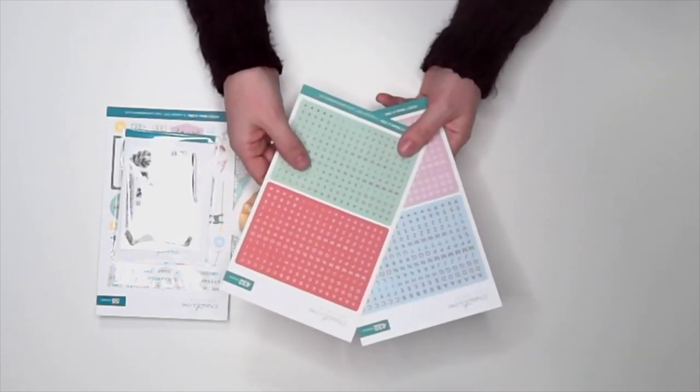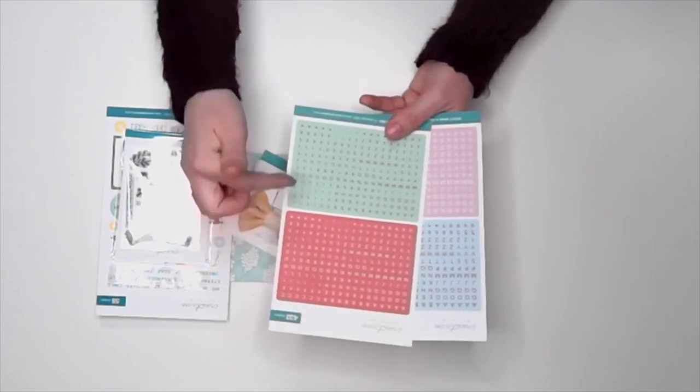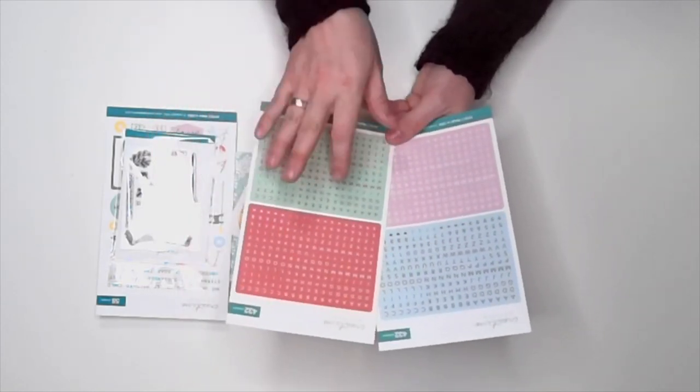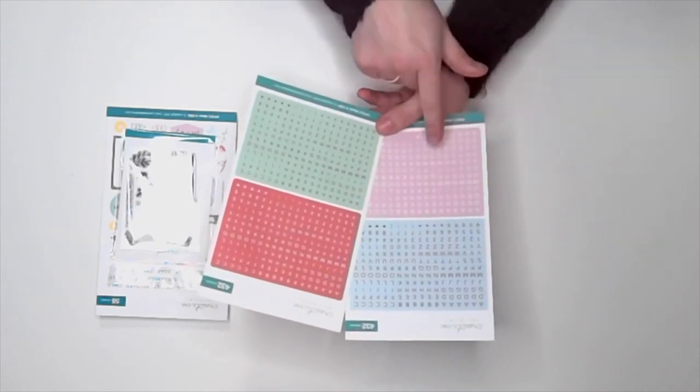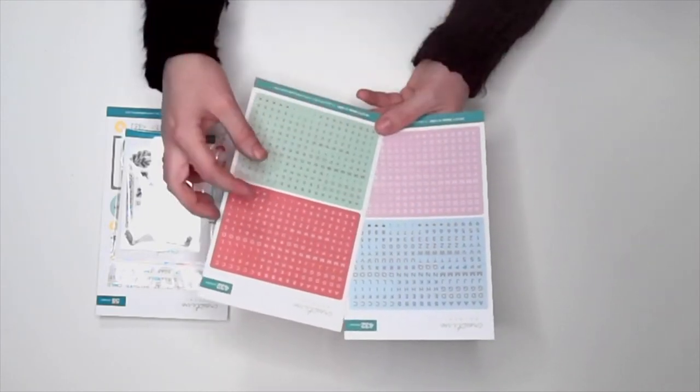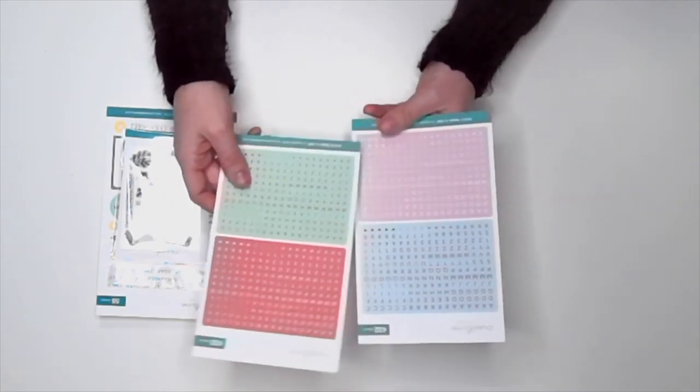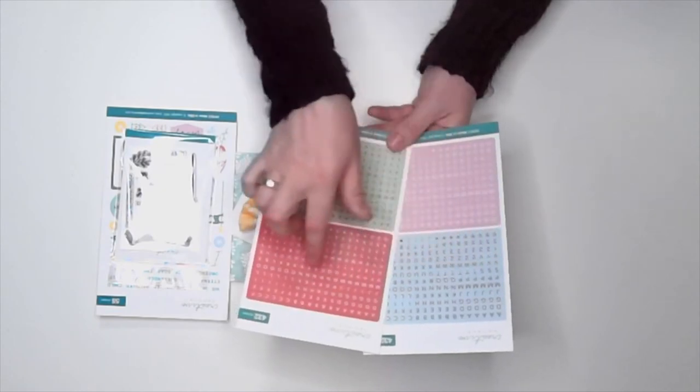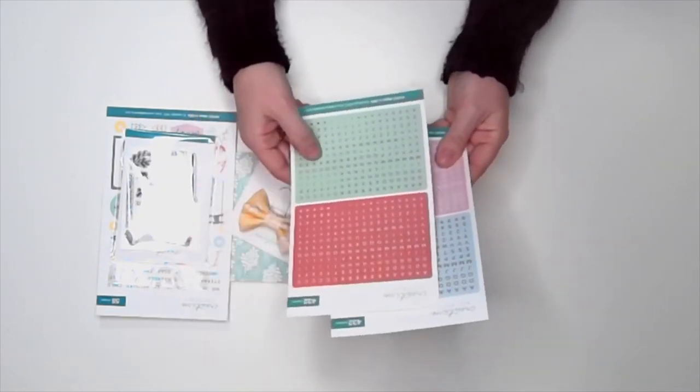And then we recently started getting two sheets of alphabet stickers in our kit. This month there are actually four different colors, which I just love. You end up with such variety. The pink and blue background ones - light blue - are a little bit larger font size than these green and coral. I love that because it gives you variety. You can mix and match or you can stay consistent.